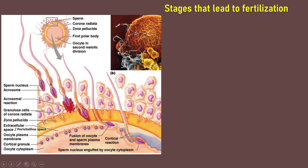Inside the sperm head is the sperm nucleus and acrosome. Inside the acrosome is the hydrolytic enzyme. The granulosa cells form the corona radiata. The zona pellucida is the jelly coat protecting the secondary oocyte. Between the zona pellucida and the plasma membrane of the secondary oocyte is the extracellular space, or perivitelline space. Inside the cytoplasm of the secondary oocyte are many cortical granules containing enzymes.